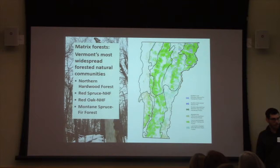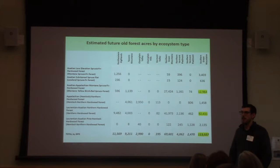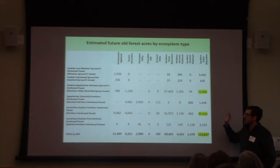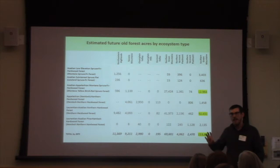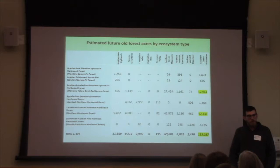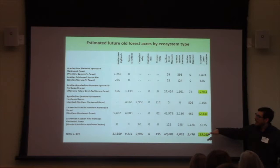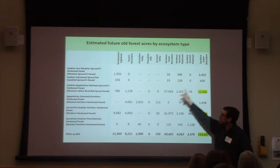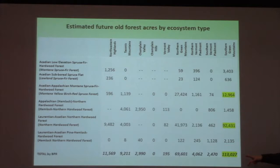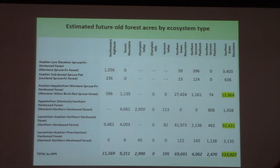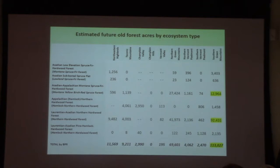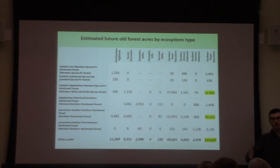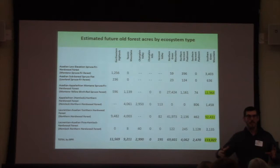We can actually go through and look at how we're doing by different forest types in achieving old forests. We have essentially no actual old forest on the ground now, but we have forests that over time will become old because of their management strategies or current classification. These are acres expected to become old forest, divided by biophysical region and forest type. We can't do anything to make forests older — there's great work being done to increase their structure, but it does not make them older. This is really something we just need to wait for nature to do.